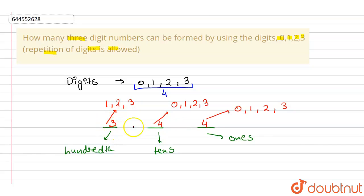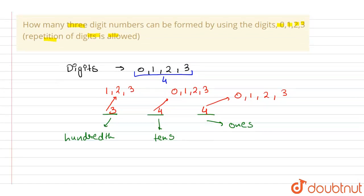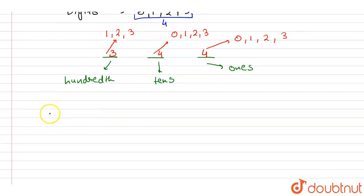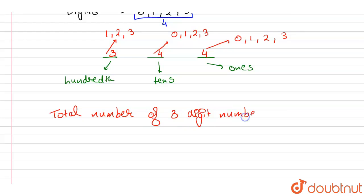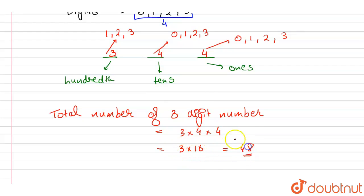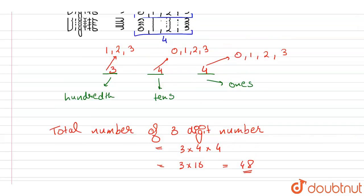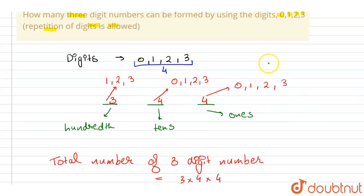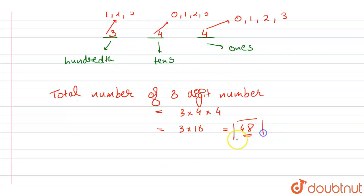So the total number of three-digit numbers will be equal to: hundreds place × tens place × ones place = 3 × 4 × 4 = 3 × 16 = 48. So 48 such three-digit numbers can be formed using the digits 0, 1, 2 or 3. That is the answer.